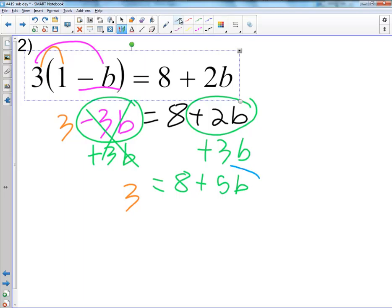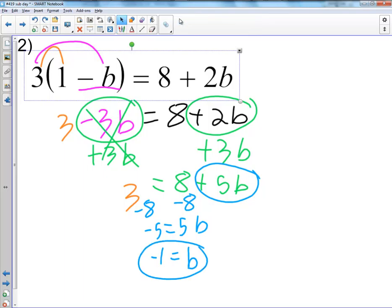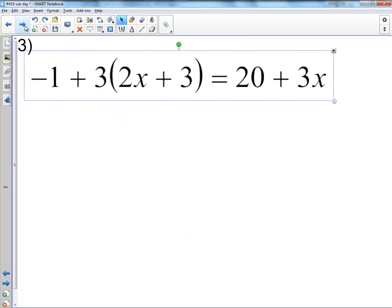Again, I want to circle the variable to take care of the hater. Positive 8, so I'm going to subtract 8 from both sides. Negative 5 equals 5b. B equals negative 1. Realize you can write the variable on the right side. That's perfectly okay.